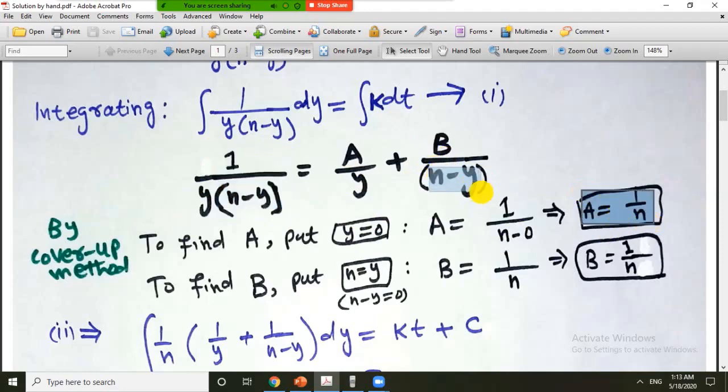To find b, put n minus y is equal to 0 or n is equal to y in this expression. If we cover up or hide n minus y because we cannot put n minus y here, we have to put it in 1 over y. So 1 over n.